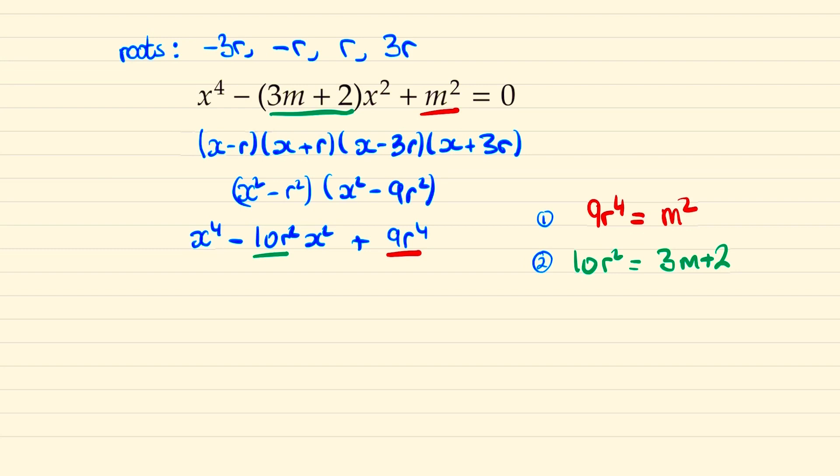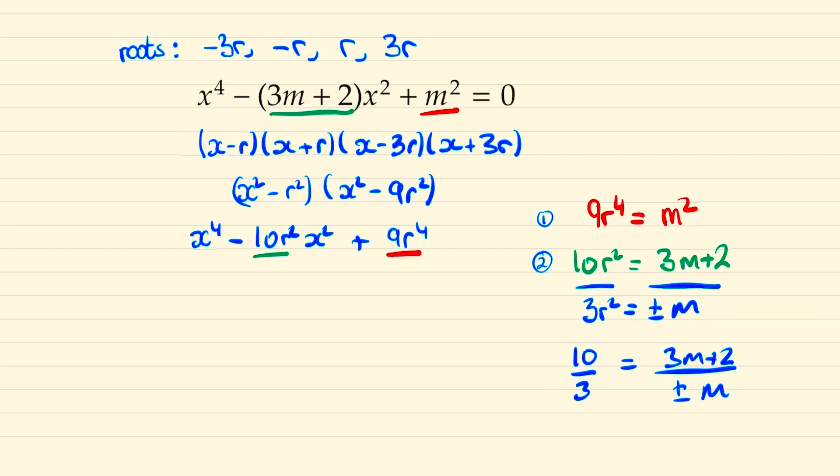If we square root equation number one first we find that 3r squared is equal to plus or minus m. And so dividing these two equations we have that 10 over 3 is equal to 3m plus 2 over plus or minus m. And cross multiplying these we find plus or minus 10m is equal to 9m plus 6.